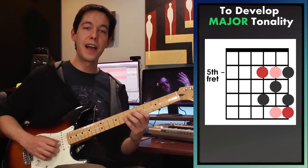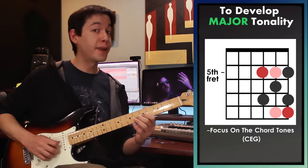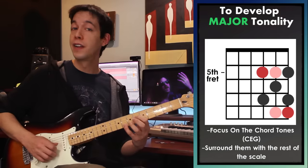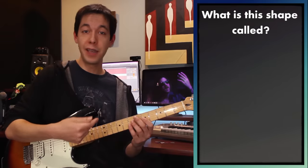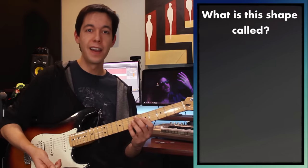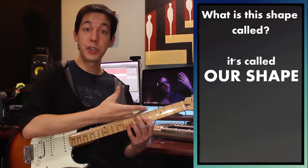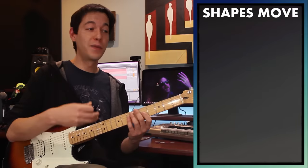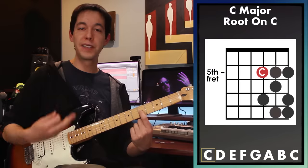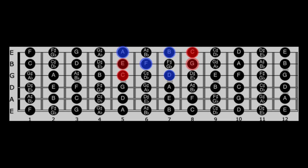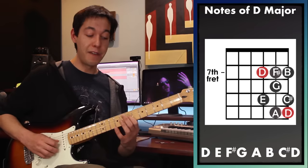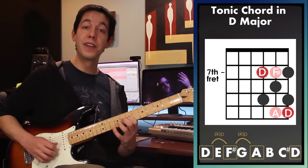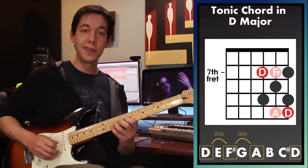I can develop a strong C major tonality just by focusing on, hanging out on, and prominently featuring those chord tones. This shape doesn't have an official name — I'm just going to call it 'our shape.' The great thing is we can develop any tonality just by sliding it around. I could make a D major tonality just by shifting everything over to D, giving me D, E, F#, G, A, B, C#, D.